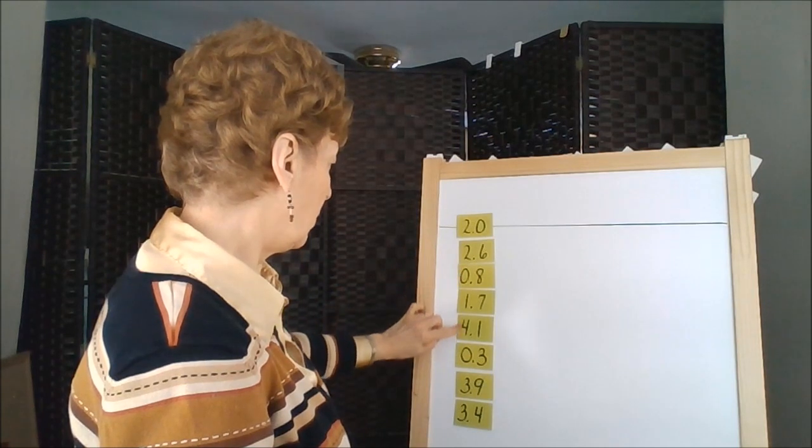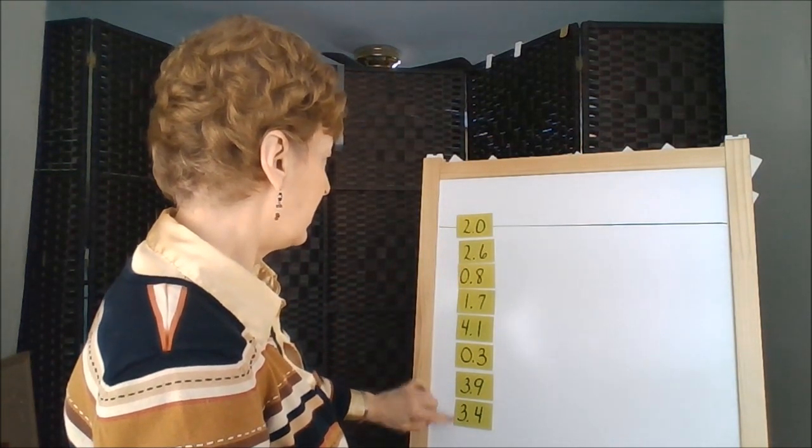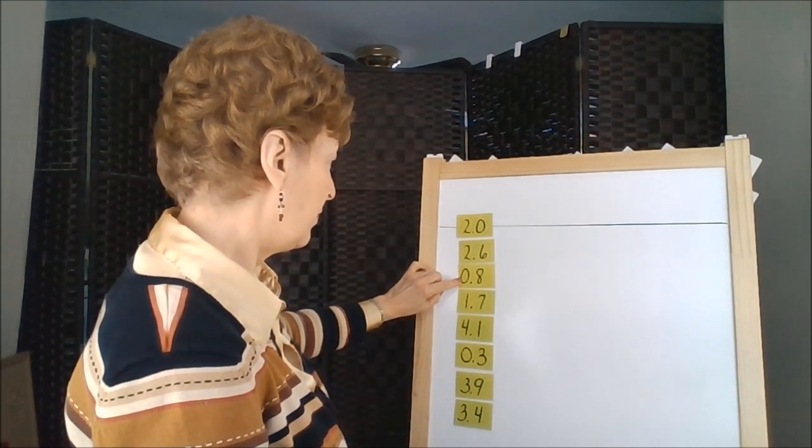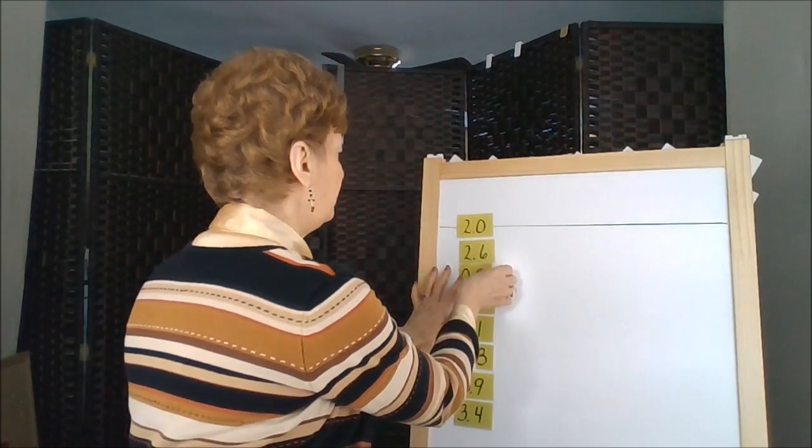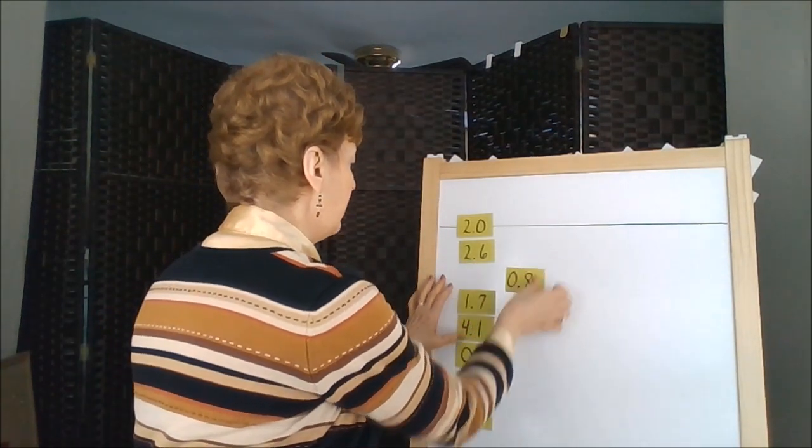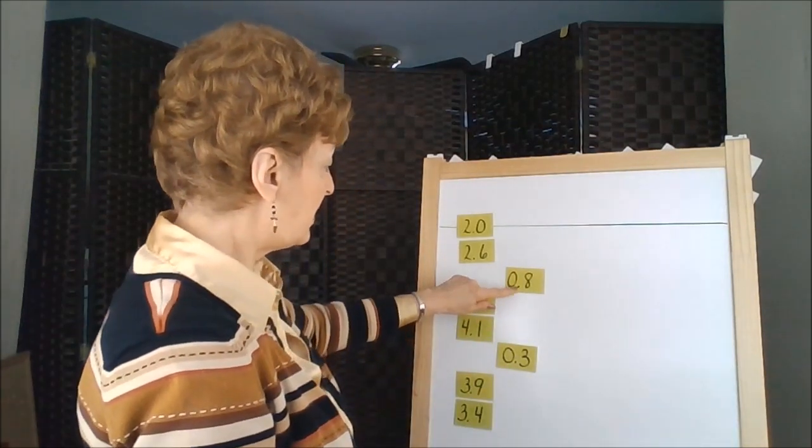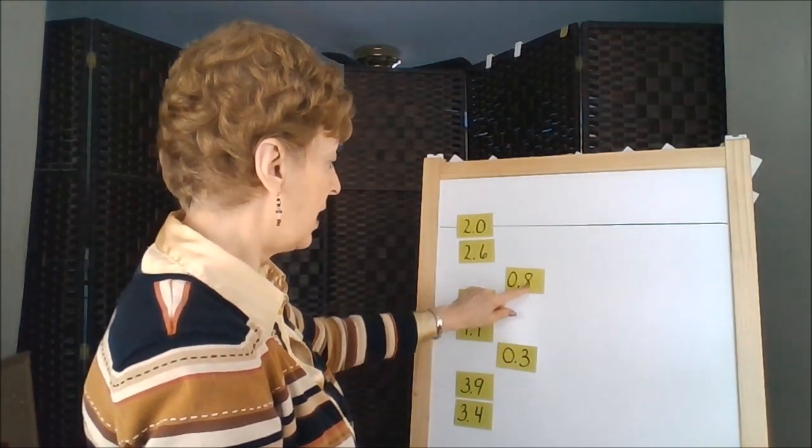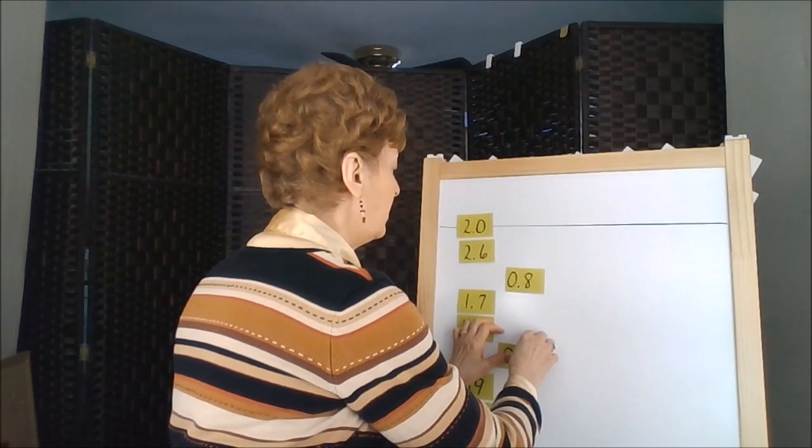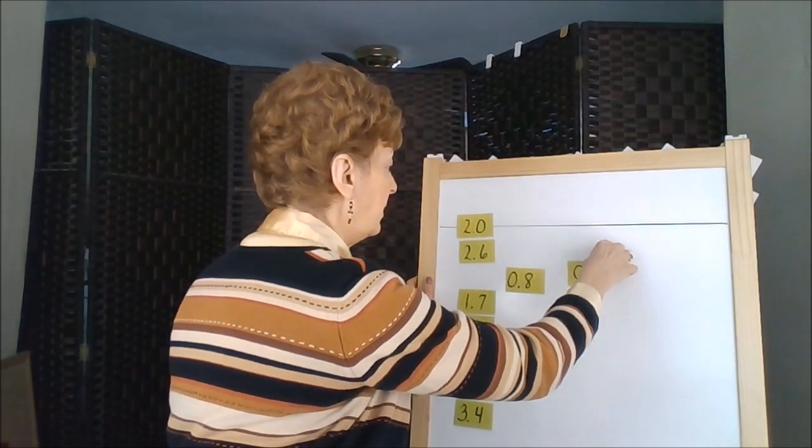Remember we looked at the ones column to find the smallest number. Here we have two zeros so these will come out for consideration. Lining up the decimal point, we see that 0.3 is larger than 0.8 with our second numbers.